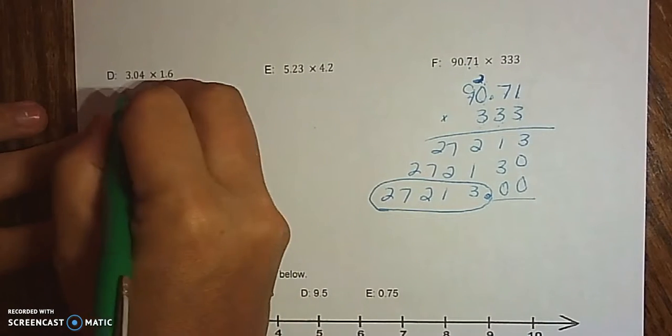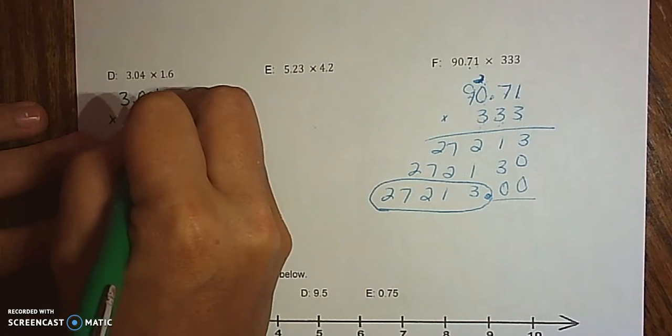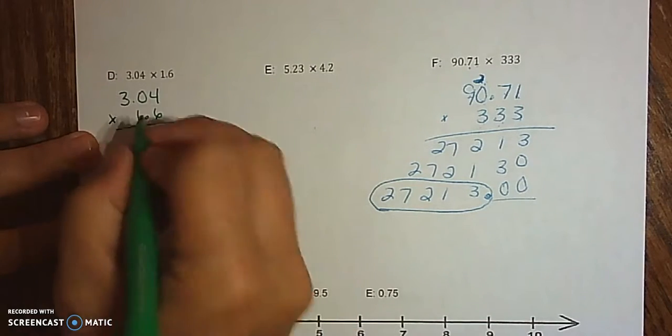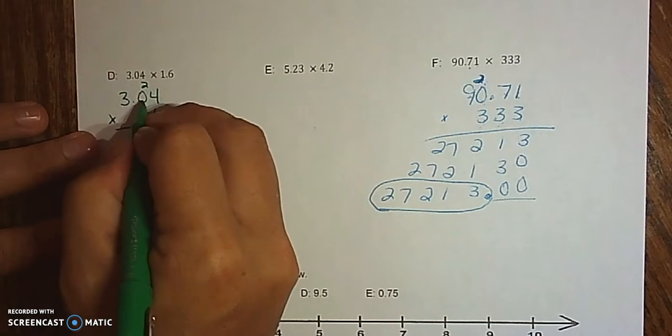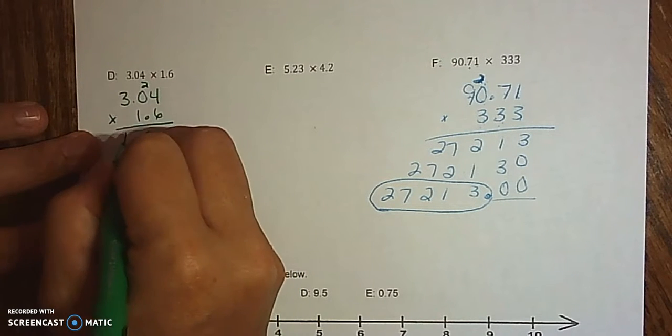All right, back for D and E. We've got 3.04 times 1.6. 6 times 4 is 24. 0 times 6 is 0, plus 2.